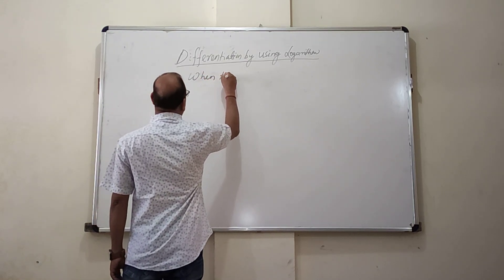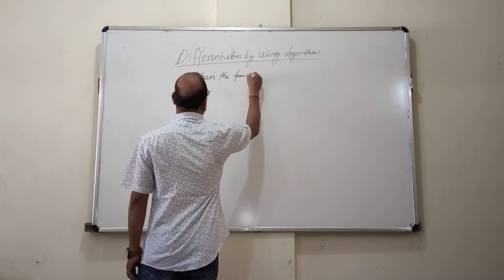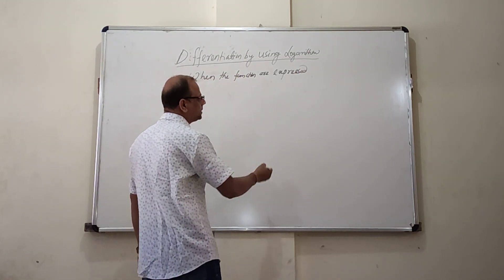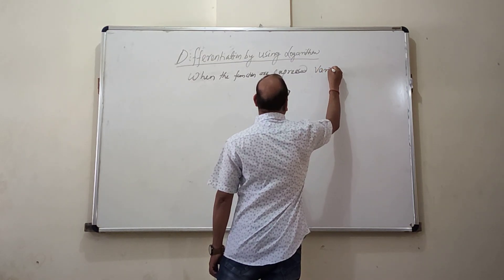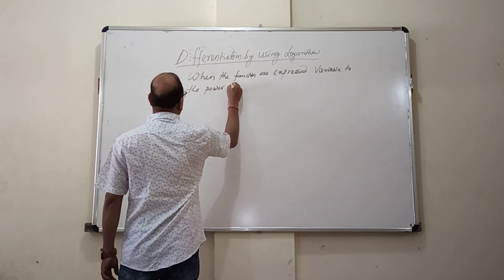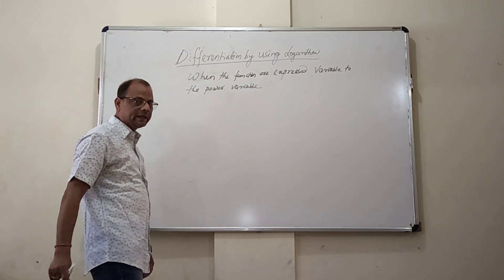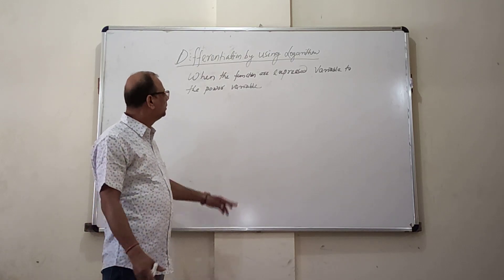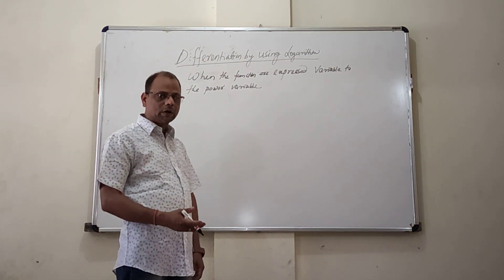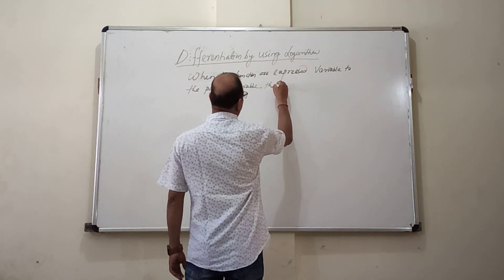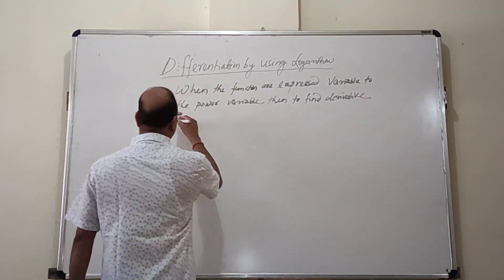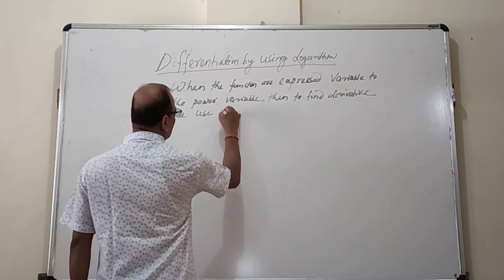When the functions are expressed as variable to the power variable, or in exponential form or power form, then to find the derivative we use logarithm on both sides.